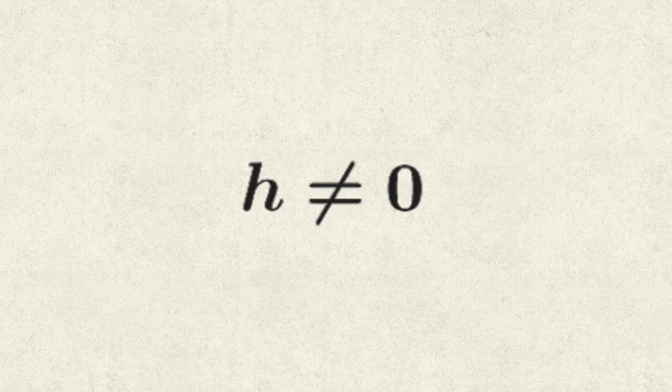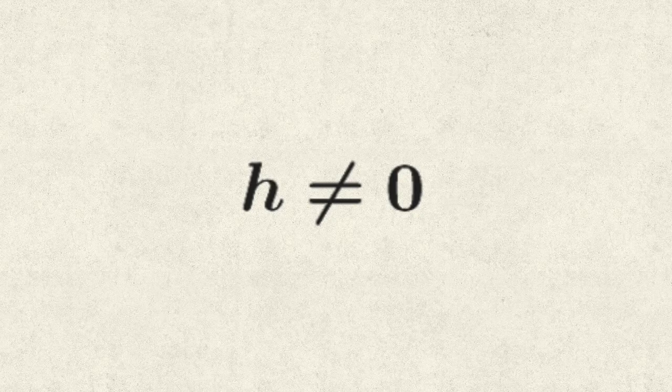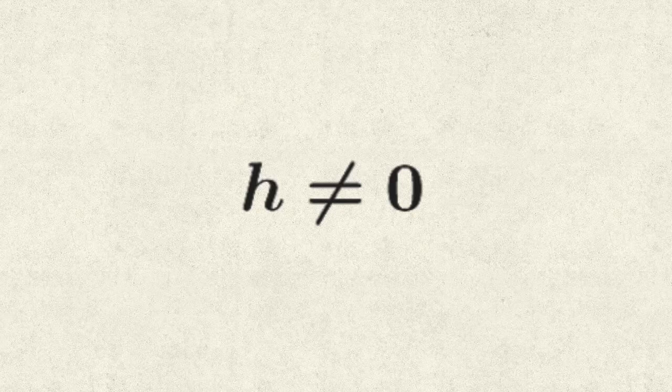Of course, the requirement is only that h is not equal to zero. We could have just as easily have gone to the left instead of the right. Even so, the difference quotient remains the same.